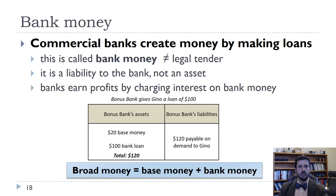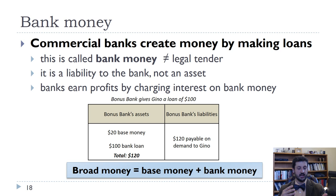As opposed to base money or high-powered money, we can think of bank money. Bank money is not necessarily legal tender. It's a liability to the bank, not an asset, but it's created by the bank when it takes deposits and makes loans. This is how a bank makes a profit — they earn interest on loans and pay a lower interest on deposits.